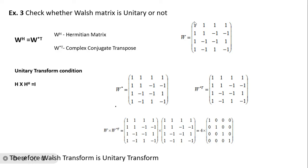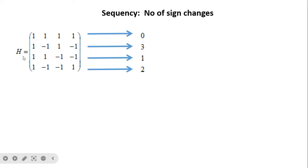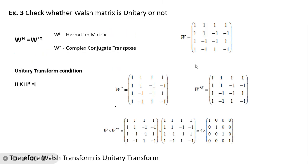Next, check whether the Walsh matrix is unitary. The Walsh matrix is created from the Walsh-Hadamard matrix but with frequencies arranged in ascending order: 0, 1, 2, 3. Since no complex numbers are present, W* = W, so we take only the transpose. Multiplying W by its transpose gives the identity matrix. To normalize, multiply by 1/√4 to get I.